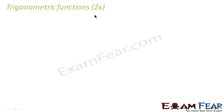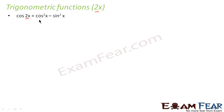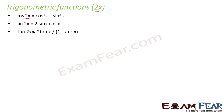Now let's see some trigonometric functions of the form 2x. When you say cos of 2x, that is nothing but cos squared x minus sin squared x. When you say sin 2x, that is nothing but 2 sin x cos x. When you say tan 2x, that is nothing but 2 tan x by 1 minus tan squared x.